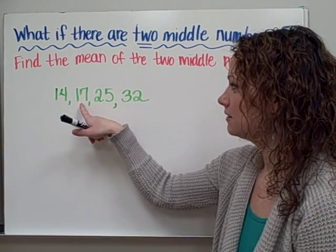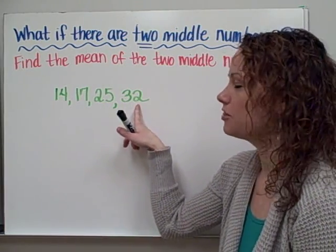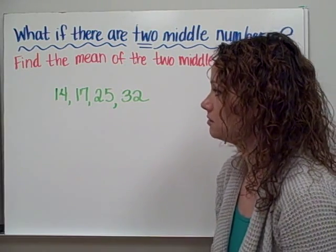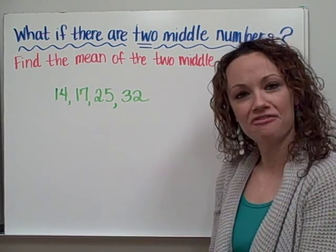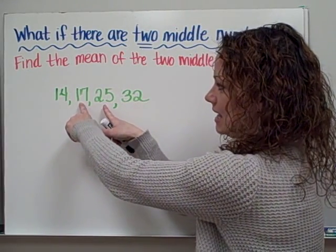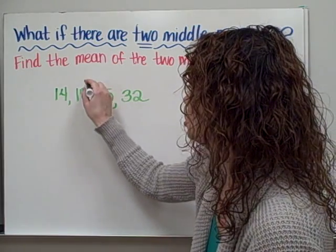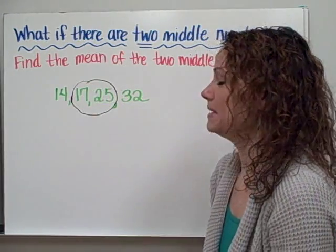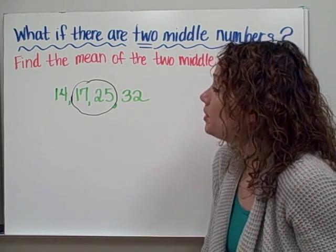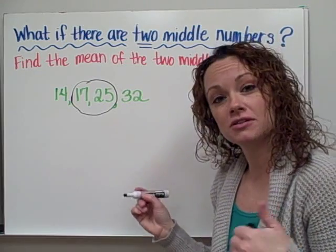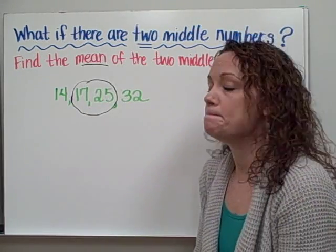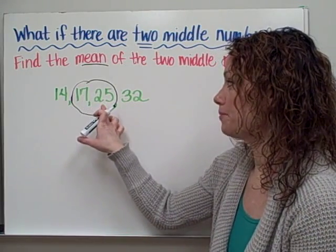We have the numbers 14, 17, 25, and 32. And if you notice, they're already listed in order from least to greatest, which is fabulous — that's our first step. However, if we start from the outside and work our way in, we are left with two middle numbers. We're going to pull in a strategy that we learned in one of your earlier lessons — we're going to find the mean score of your two middle numbers.